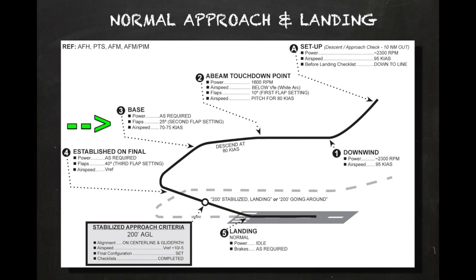When established on the base leg, the flaps should be extended to 25 degrees with a target airspeed of 70 to 75 knots.